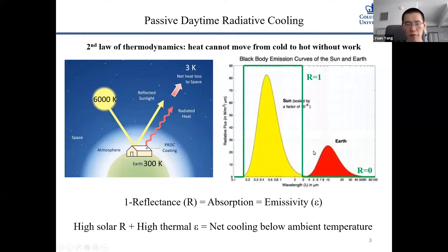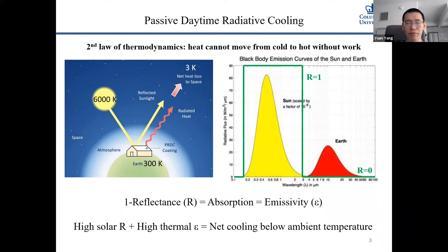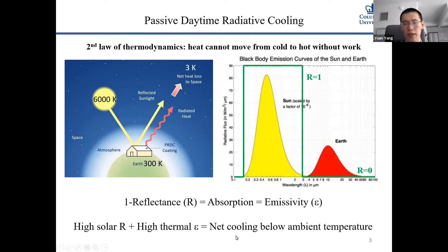In terms of optical properties, in the solar spectrum from 0.2 to 2 micrometers in wavelength, the reflectance should be very high so that the surface receives no energy from sunlight. At the same time, in the thermal radiation part, the reflectance should be very low — indicating an emissivity close to 1, meaning a very high capability to radiate heat. The take-home message is: high solar reflectance and high thermal emittance equals net cooling below ambient temperature.